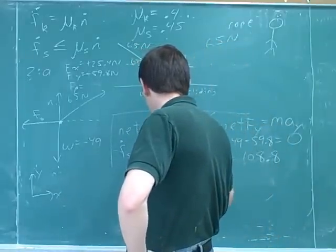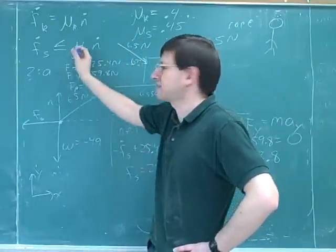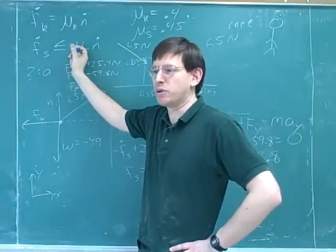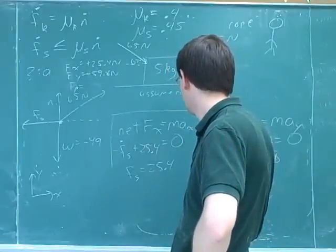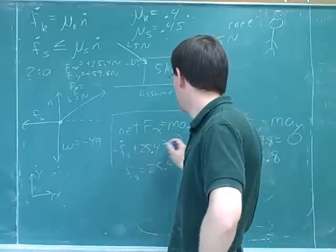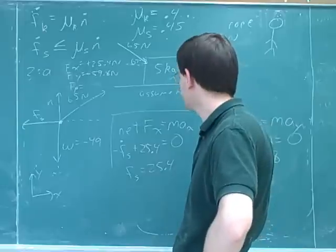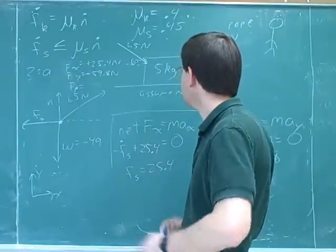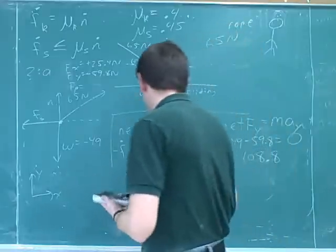So our static friction here is going to be 25.4. And now we can check this against our inequality to see whether we violated that or not. That doesn't work. Yeah, we can move this term over here. And that would be, those would come out. Did I make a mistake? No, but I mean, if you plug it into the thing, 0.45 times 108.8 is 25.8. Oh, okay.